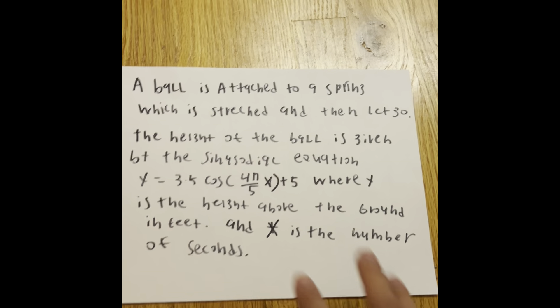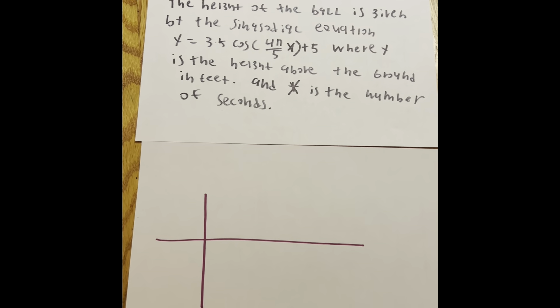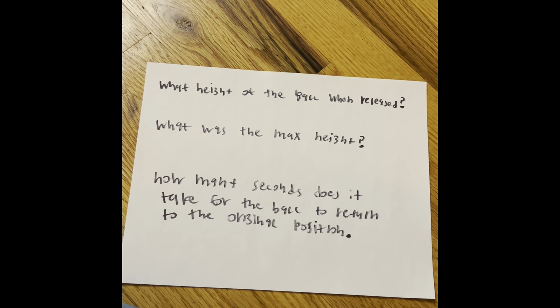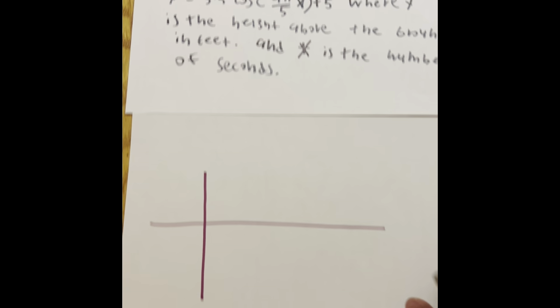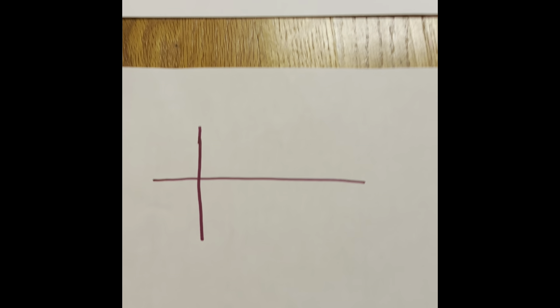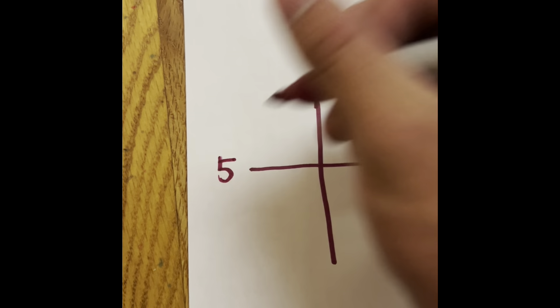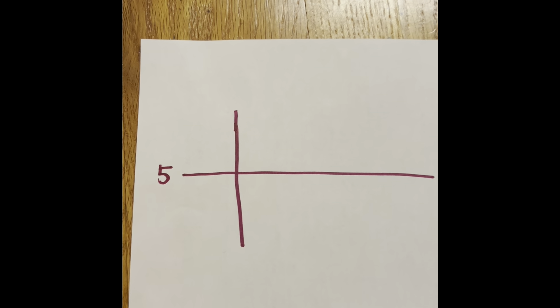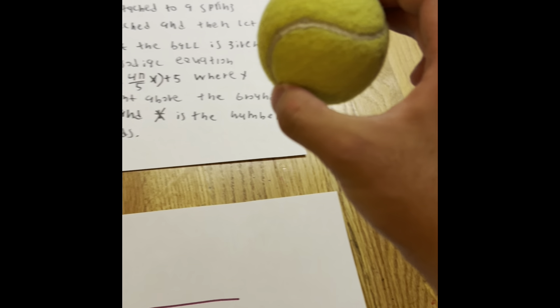What we're going to do is make a graph, but also answer questions right over here. So right over here, we're going to put 5 feet at the midline. You might be asking why the midline — that is the neutral point of where you hold the ball, 5 meters above the ground.